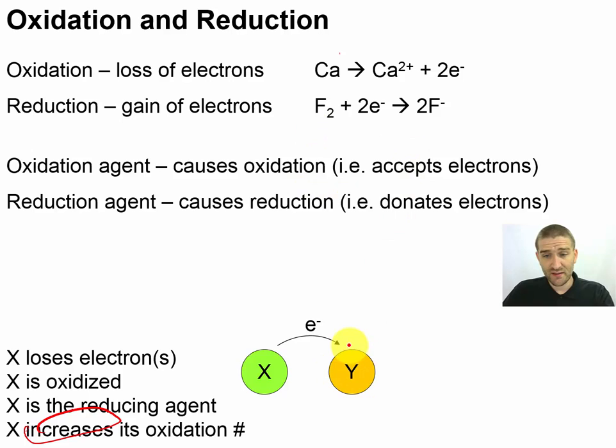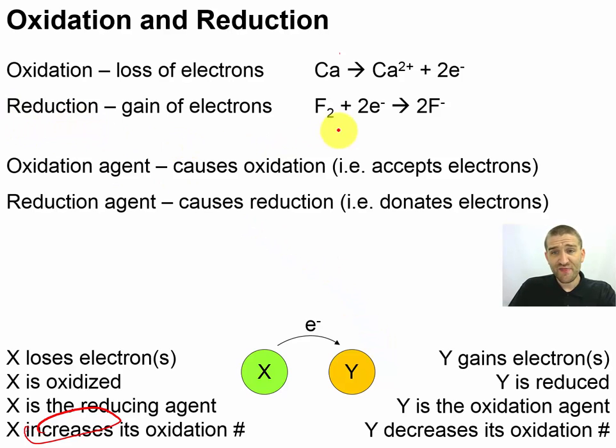Y, on the other hand, has received an electron. It gained electrons. That means it has been reduced. That makes it the oxidation agent, and it means that its oxidation number has been decreased.